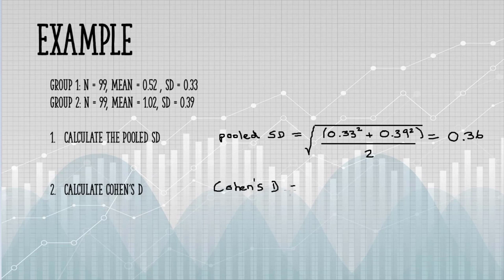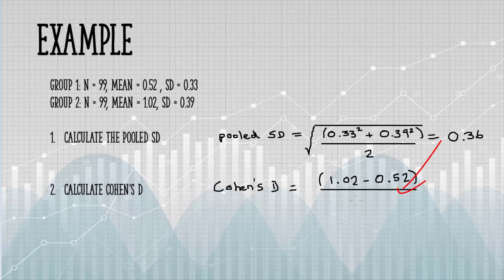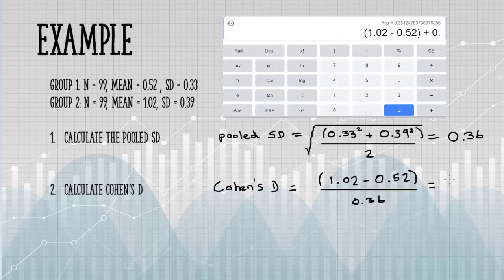The next step is to put that pooled standard deviation in the denominator of the Cohen's D formula. I'm going to subtract my two means. You'll want to put the larger mean first to end up with a positive value. If you end up with a negative Cohen's D, then just remove that negative sign. When I work out this formula, I get 1.39.